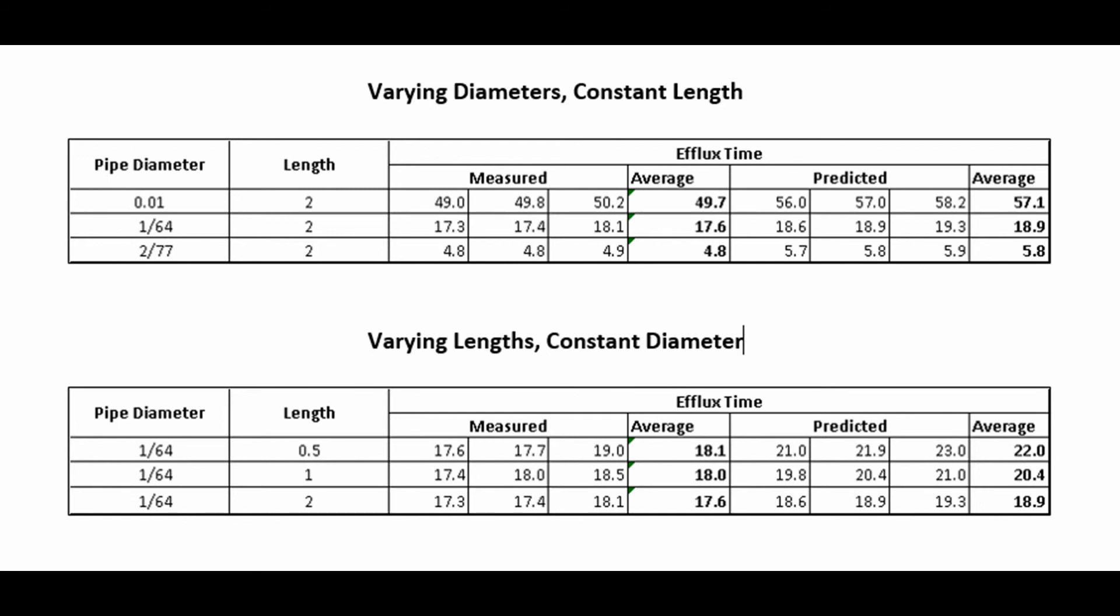This means that the smaller the diameter of the pipe, the slower the tank will drain. These values compare favorably with the predicted values from literature, showing the same trend.